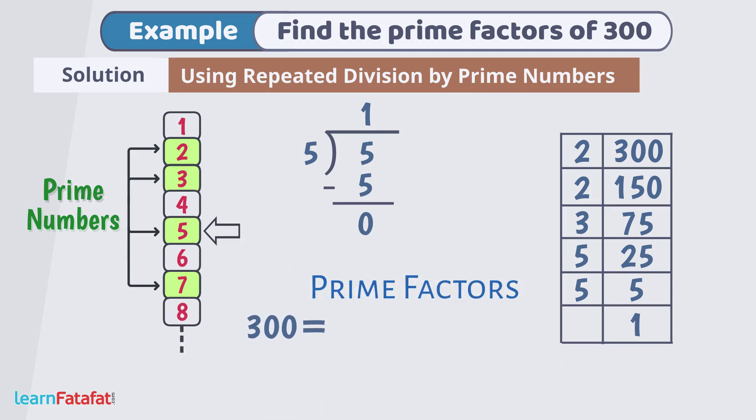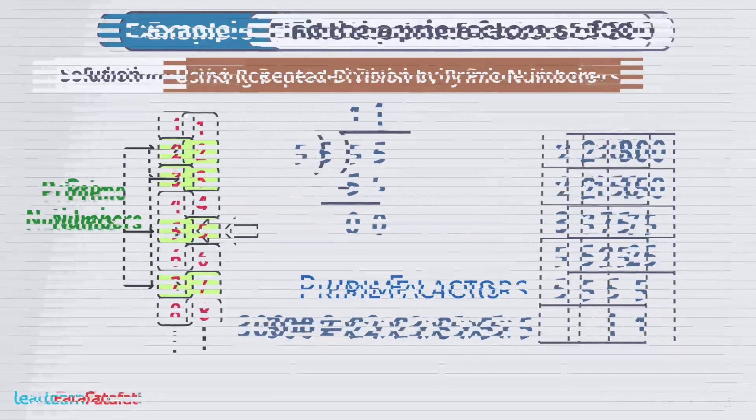So, prime factors of 300 are 2, 2, 3, 5, 5. We can also find factors by factor tree method.